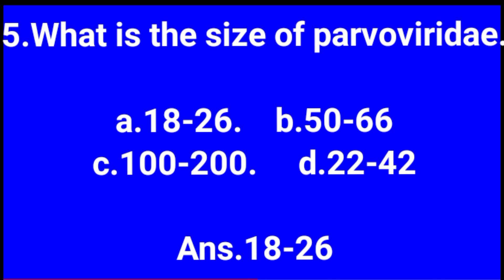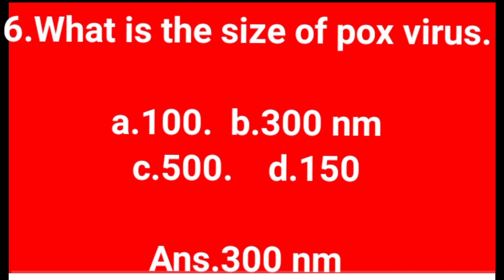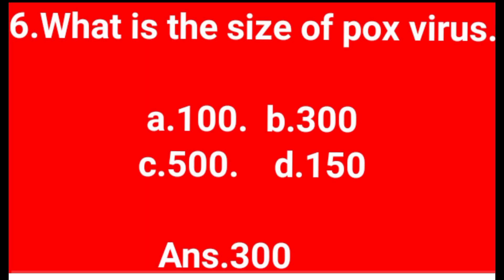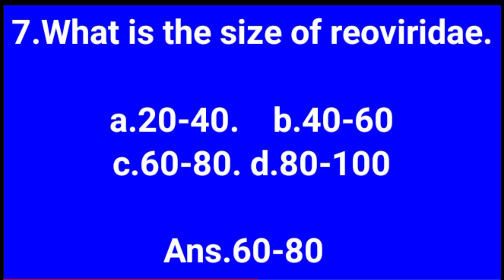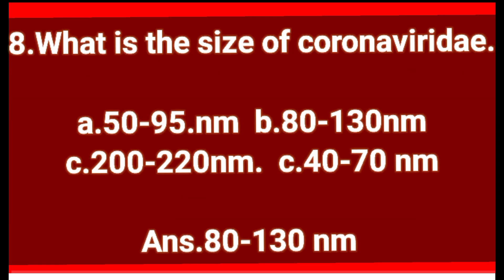The size of Parvovirus is 18–26 nm. What is the size of Poxvirus? 300 nm. What is the size of Reovirus? 60–80 nm. What is the size of Coronavirus? 80–130 nm.